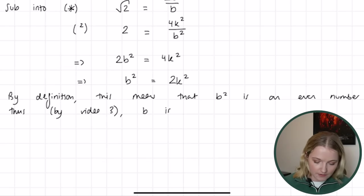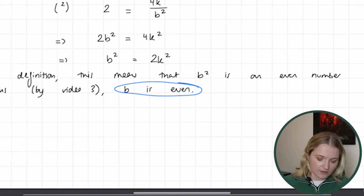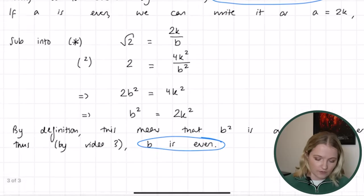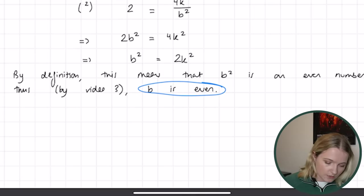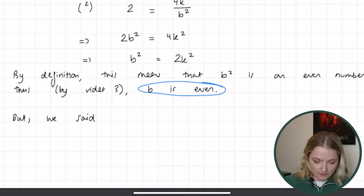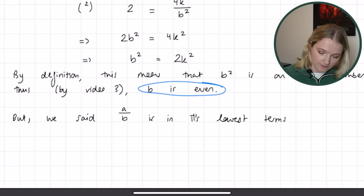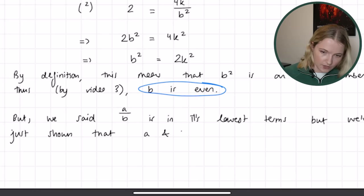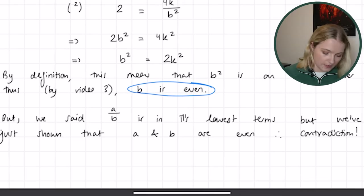b squared is even, and again by the result in video three, we can therefore say that b is also even. But what we've just shown is that a is even and b is even. However, we said that a over b had to be in its lowest terms. But clearly it's not — if a and b are both even, then a divided by b can be divided by 2, which means it's not in its lowest terms. Therefore: contradiction.